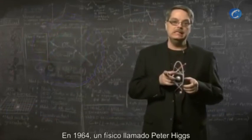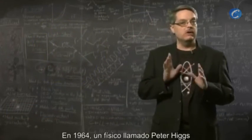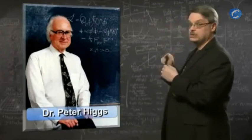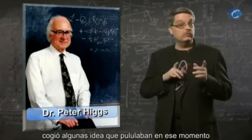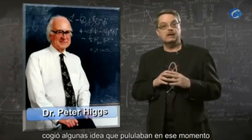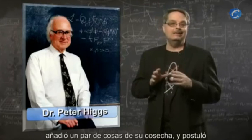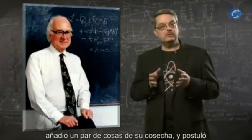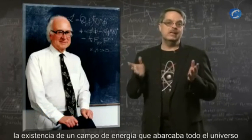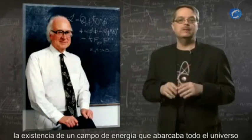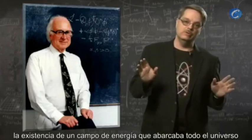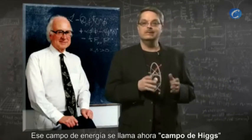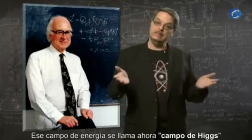In 1964, a physicist by the name of Peter Higgs took some ideas that were floating around at the time, added an insight or two of his own, and proposed that there was an energy field that permeated the entire universe. This energy field is now called the Higgs field.